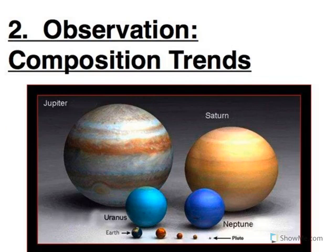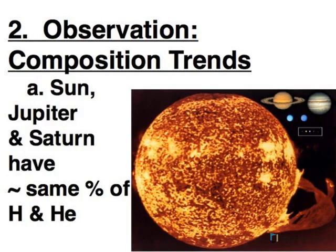In addition to the motions of the planets, we can also look at their compositions to get an idea of some of the things that occurred as the solar system formed. As we mentioned before, the Jovian planets have a composition very similar to our sun.